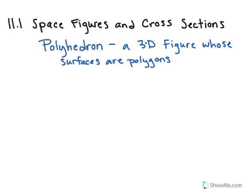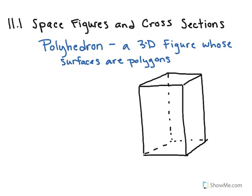For example, this here would be considered a polyhedron. If you notice, all of the sides of this figure, all of its surfaces, they're all polygons. We have rectangles, possibly squares on the ends, and they can be any polygon.